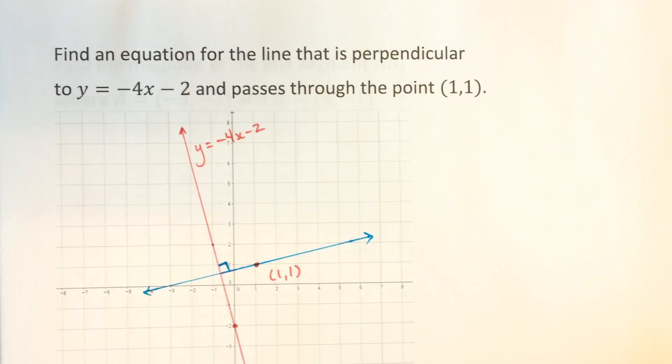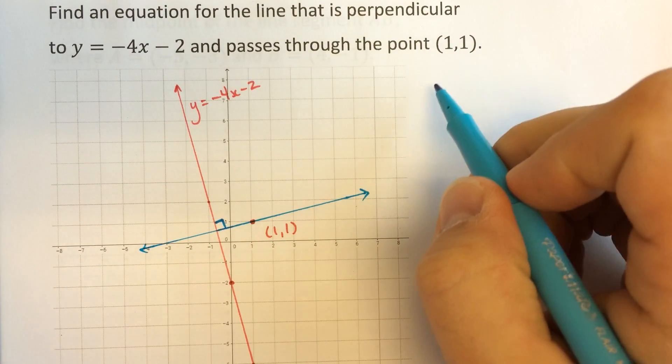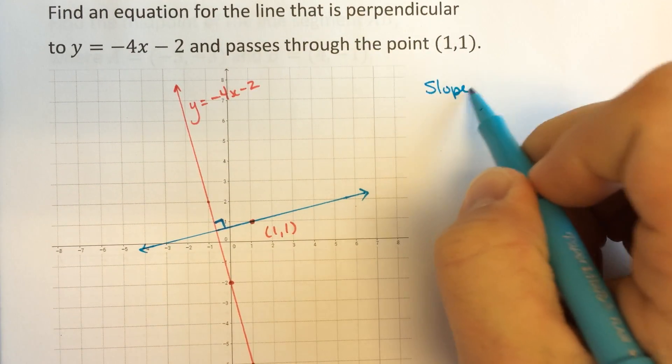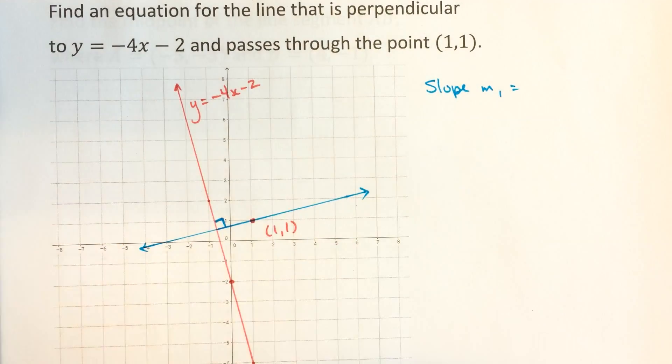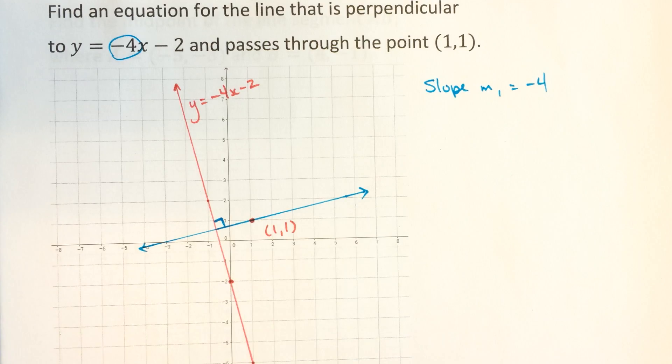So the first thing is that we notice that the slope of the first line, the original slope, which I'm going to call m1, is negative 4. We can read that directly out of the equation.